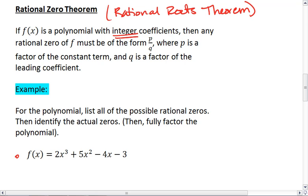First, we want to make sure that all of our coefficients are integers. We have 2, 5, negative 4, negative 3, all of which are integers, so we're good to go. We can use the rational roots theorem.